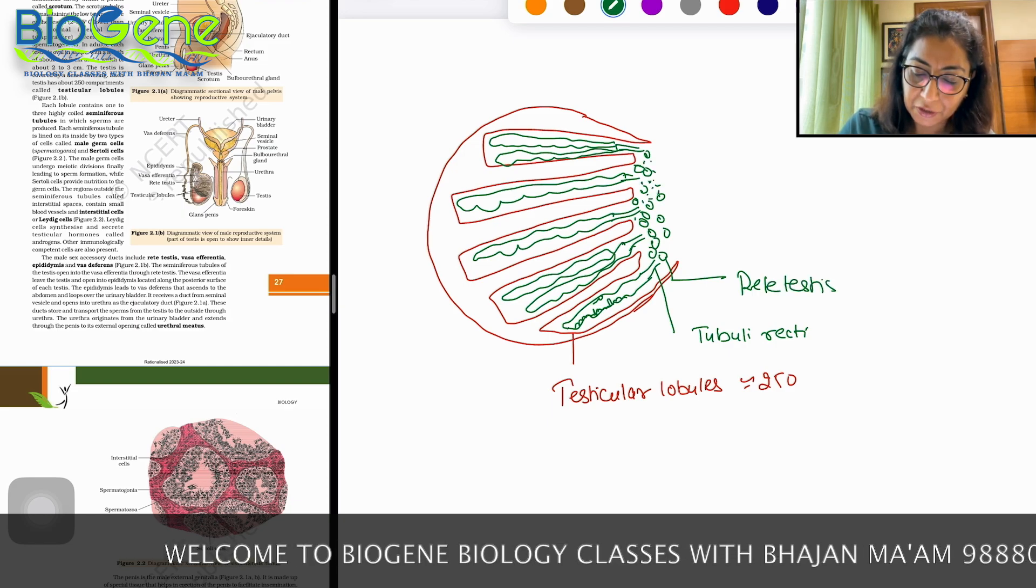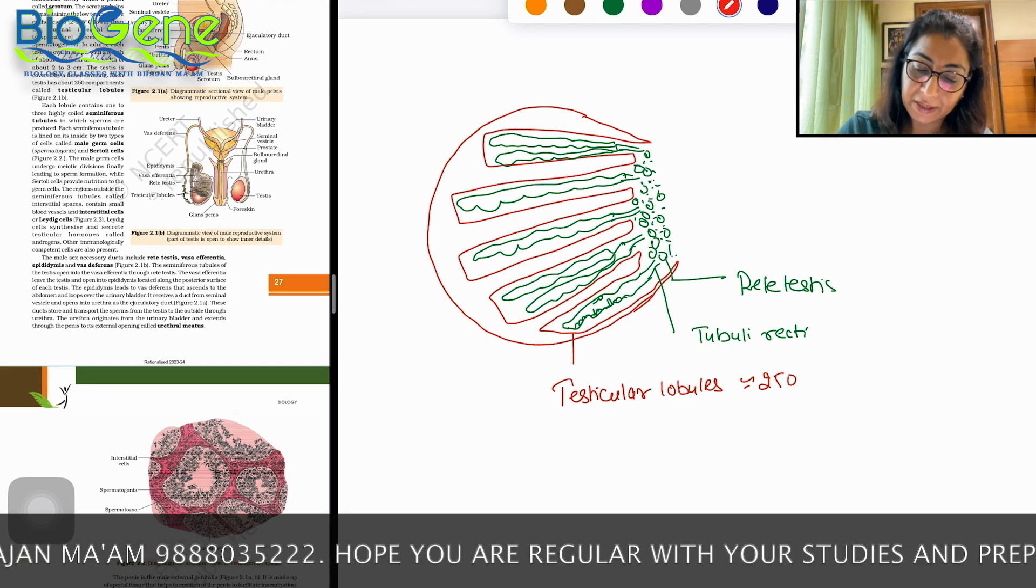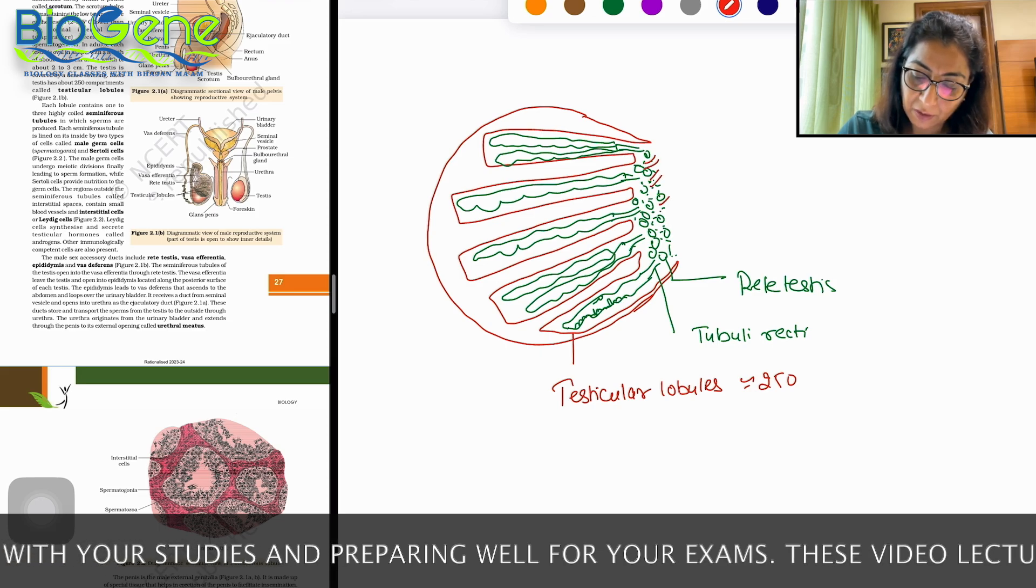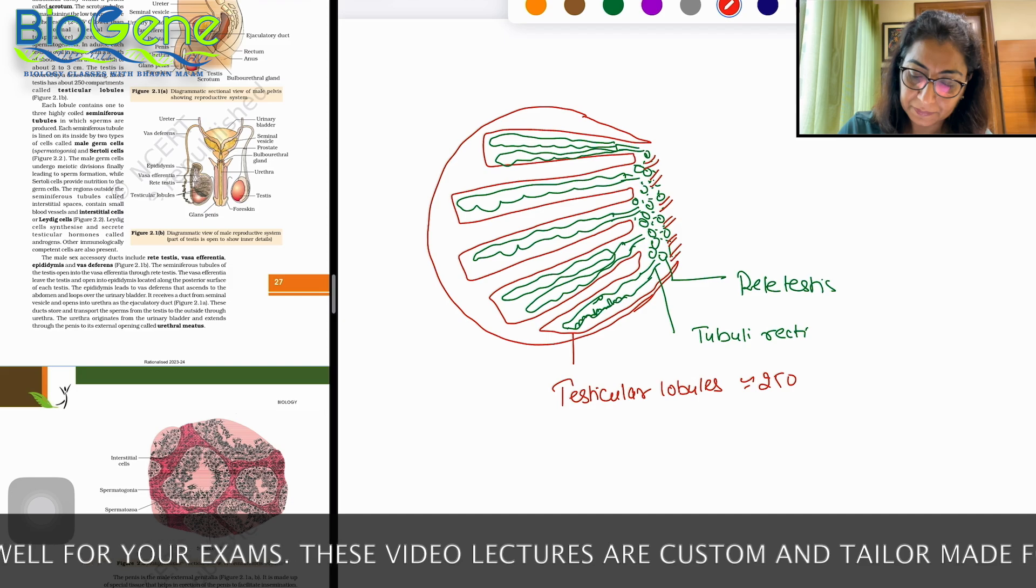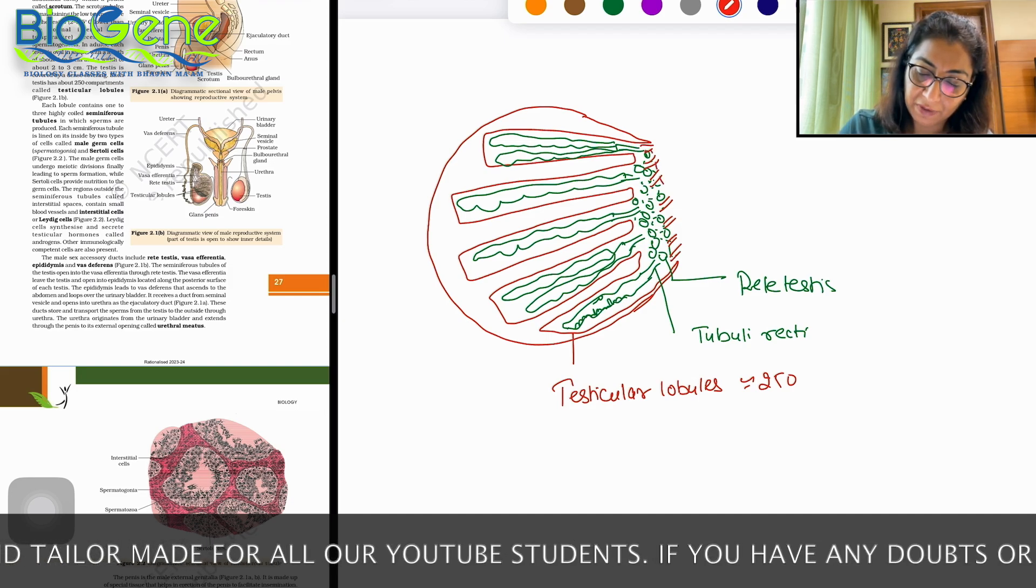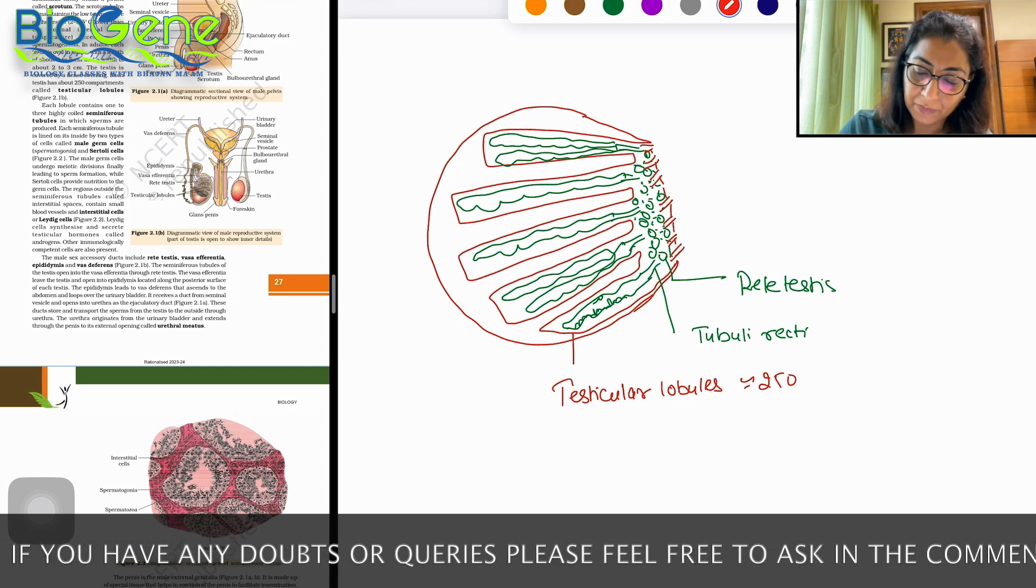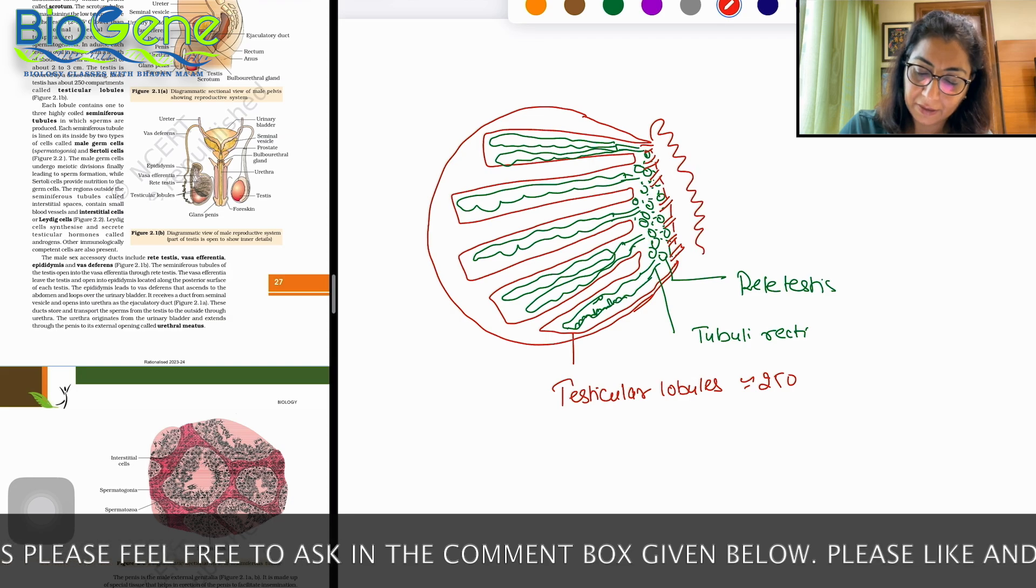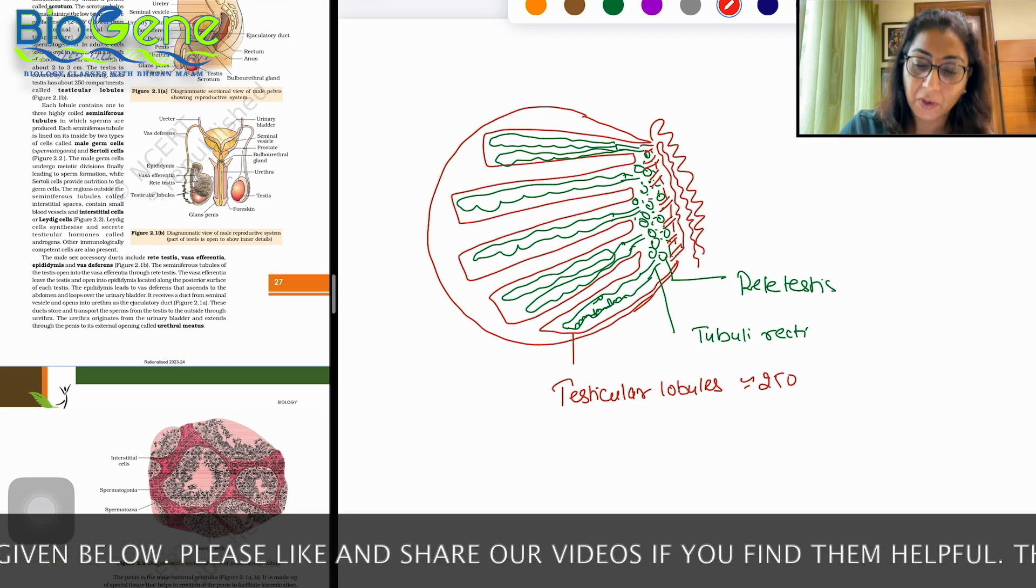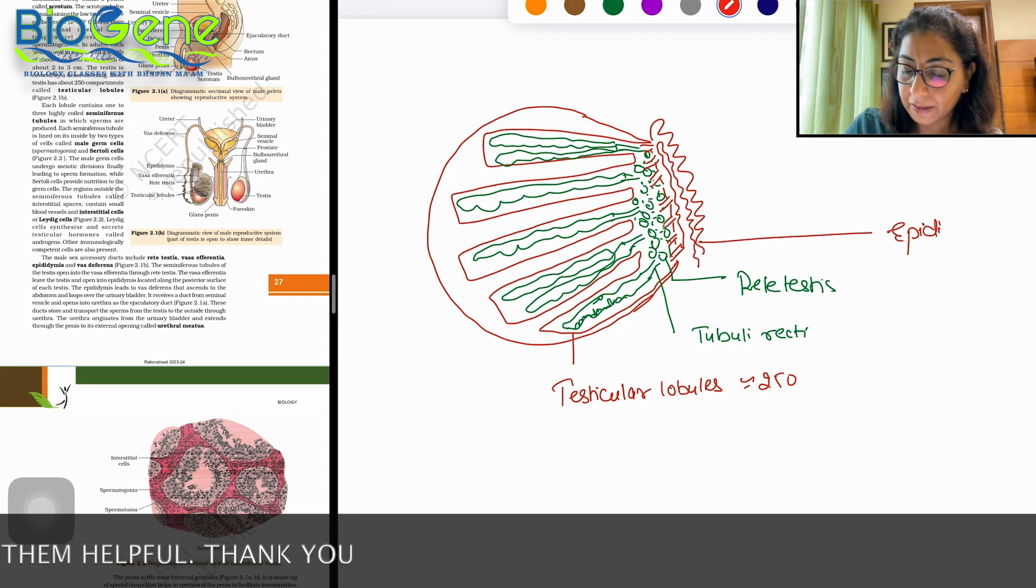And now these tubuli recti, they form a network. This network is called rete testis. From these rete testis arise small ducts. These are called vasa efferentia. These vasa efferentia join with each other and form a highly coiled duct which is visible outside the testes, approximately 6 meters long. This is called epididymis.